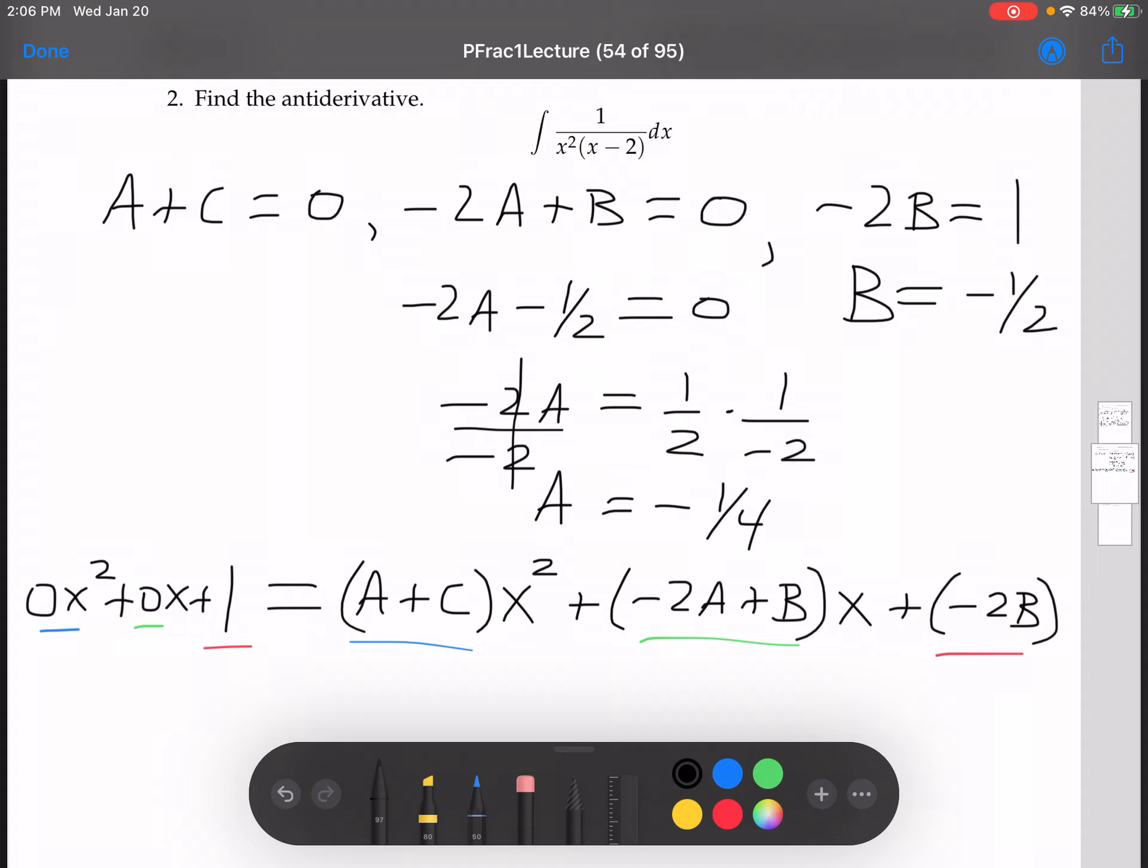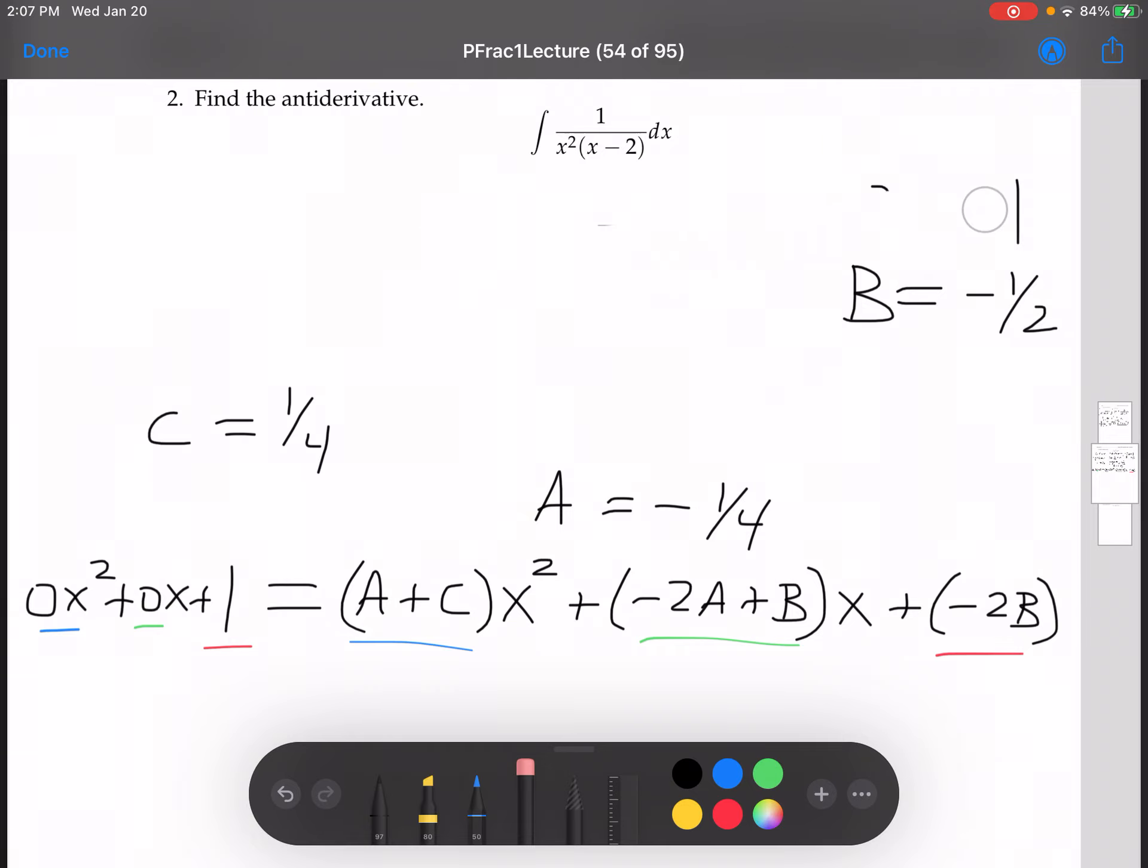If A is equal to negative 1 fourth, that means that C must be 1 fourth.